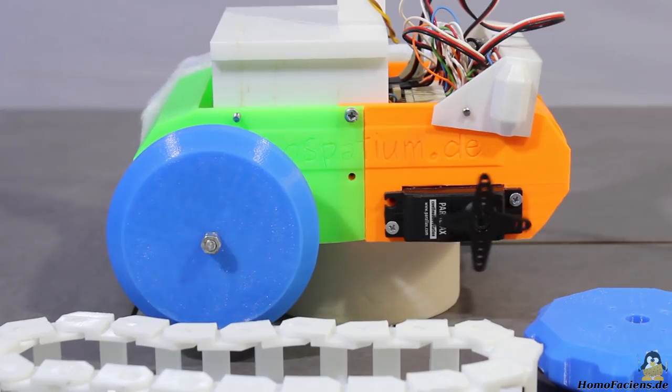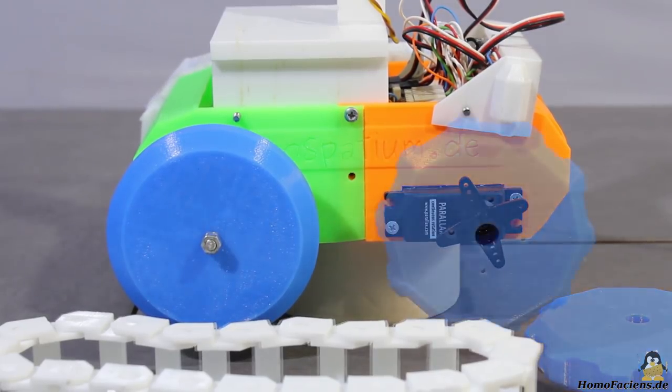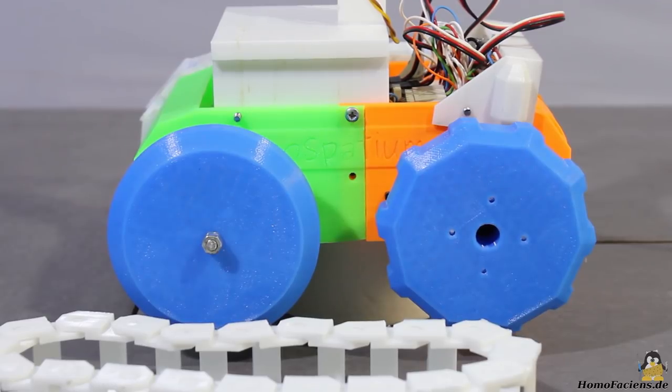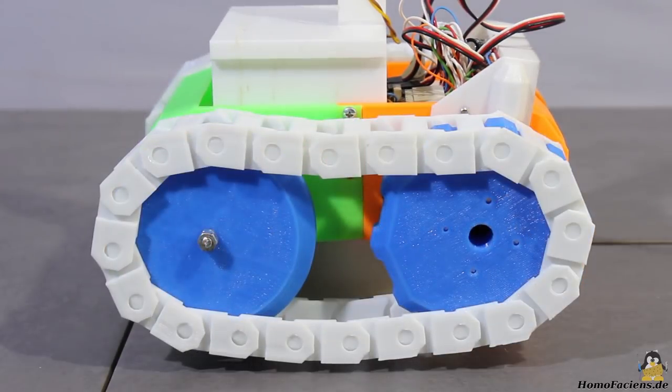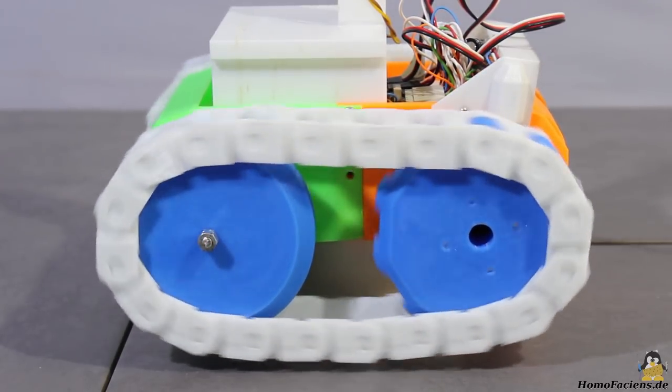The drive motors are two servos for continuous rotation with 60mm toothed wheels screwed on the levers. The rear wheels are spinning passively through the tracks.